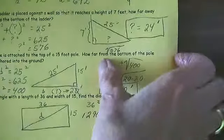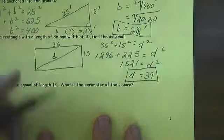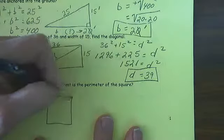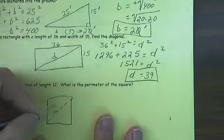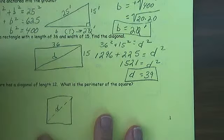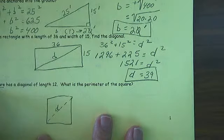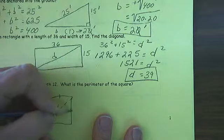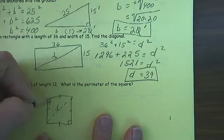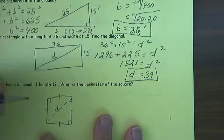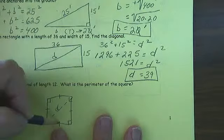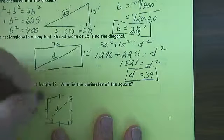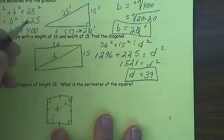Then we have number 6, a square has a diagonal of length 12. What's the perimeter of the square? Well, first we know that it's a square. This side is equal to this side is equal to this side is equal to this side and we know that we have 4 right angles. If this side is equal to this side and I have a right triangle, then I know this is a 45 degree angle, this is a 45 degree angle, who cares?